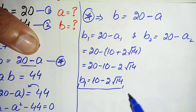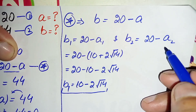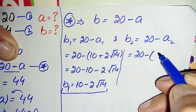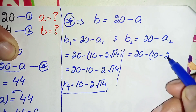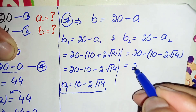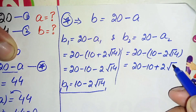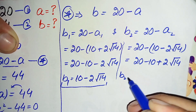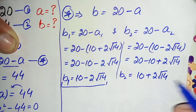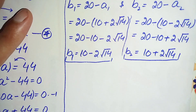For b2, we substitute the value of a2 into equation star. b2 = 20 minus a2 = 20 minus (10 minus 2 times root 14). Distributing the negative sign gives b2 = 10 plus 2 times root 14.